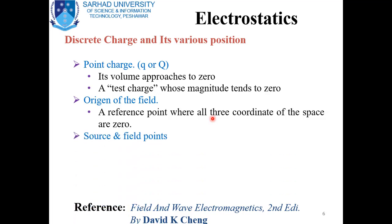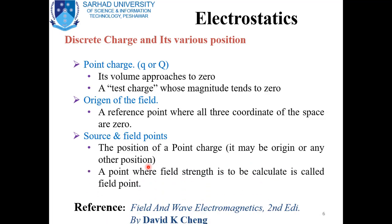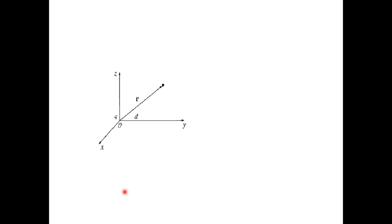A few other points are related to the point charge and the property of the electric field. One is known as the source point, where the point charge is placed — it may be the origin or some other position with respect to the origin. The point where the field is to be calculated with respect to the origin is known as the field point. From the figure you can clearly see that if all three coordinates have zero values at a single point, that point is the origin. If our charge is placed at the origin, that point is also known as the source point. We are interested to calculate the strength of the electric field at a distance R from the origin.